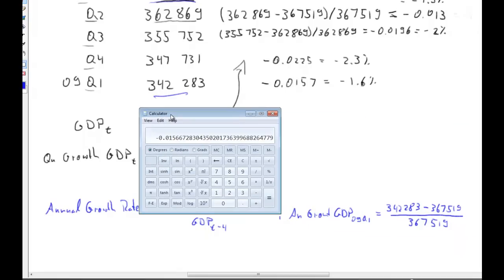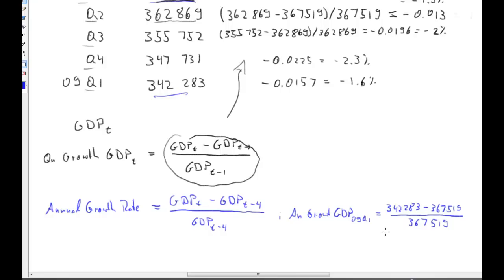And now, we need to calculate what we get here. So, we have 342,283 minus 367,519 equals divided by 367,519. And what we get is negative 0.0687. So, that is about negative 6.9%. So, this is how much GDP has shrunk.